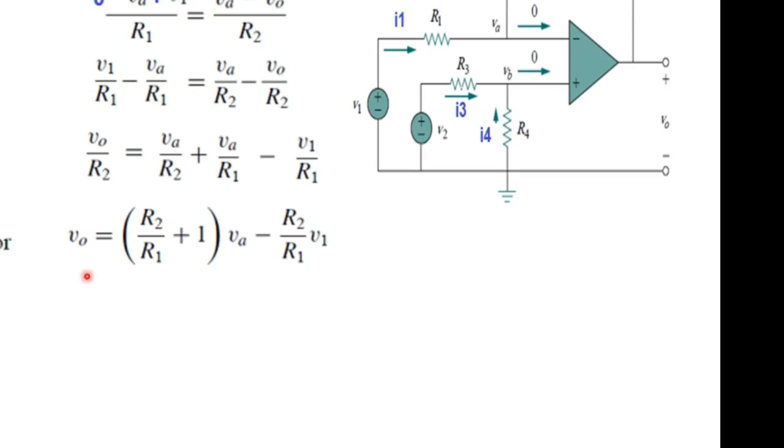this we get the output equation to be V0 is equal to R2 over R1 plus 1 into VA minus R2 over R1 V1. Now, if we solve at node B.